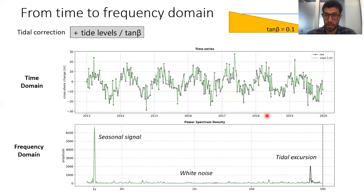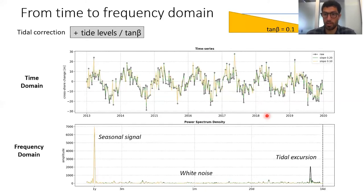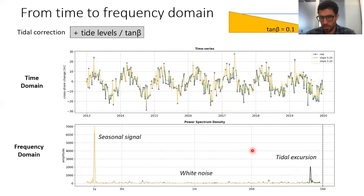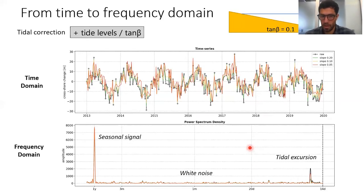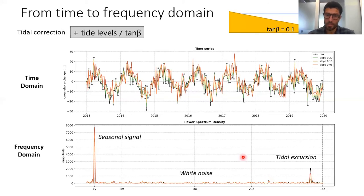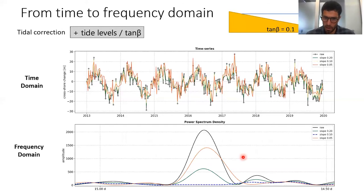If we try a different slope and eventually try 0.1 — the actual beach slope — we can see that the tidal peak is completely suppressed. And if we keep reducing the slope to 0.05, because the slope is now too gentle, we're actually adding a new tidal signal, so the peak increases again. The idea is to apply tidal correction with a range of beach slopes and find the slope that minimizes the tidal energy in the shoreline time series.